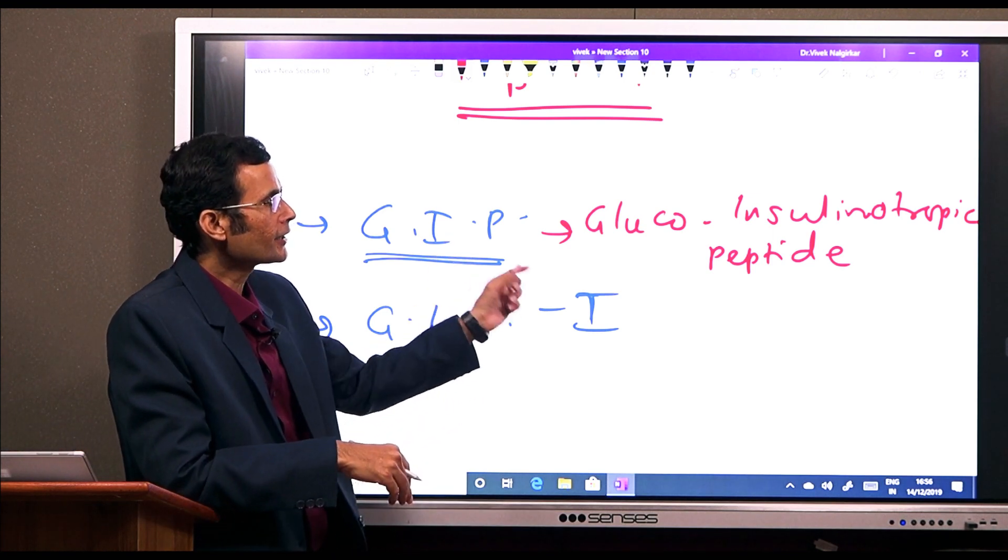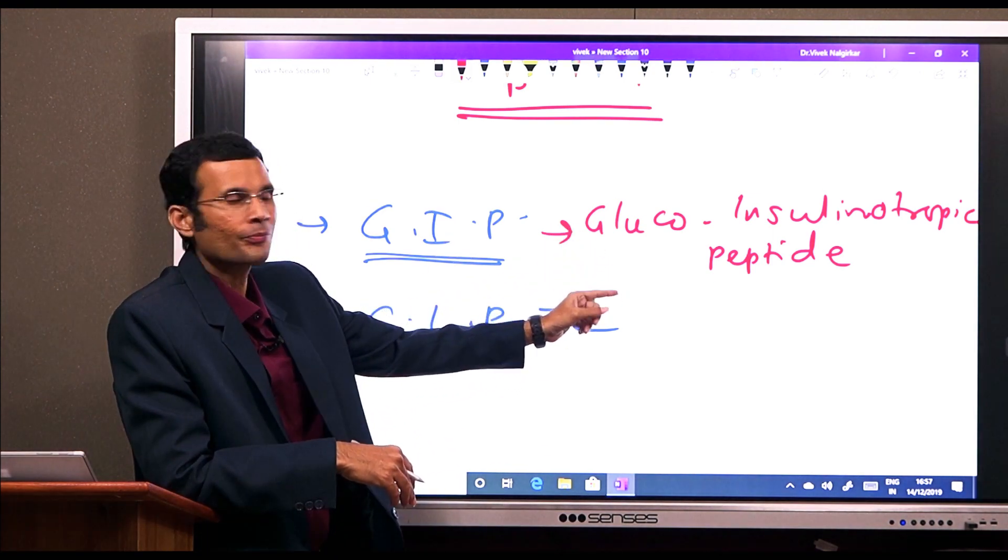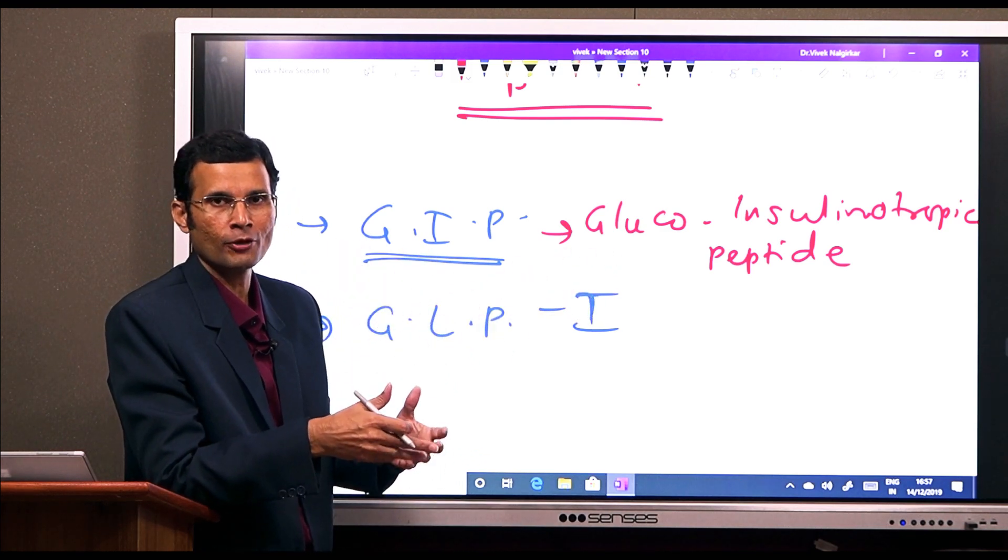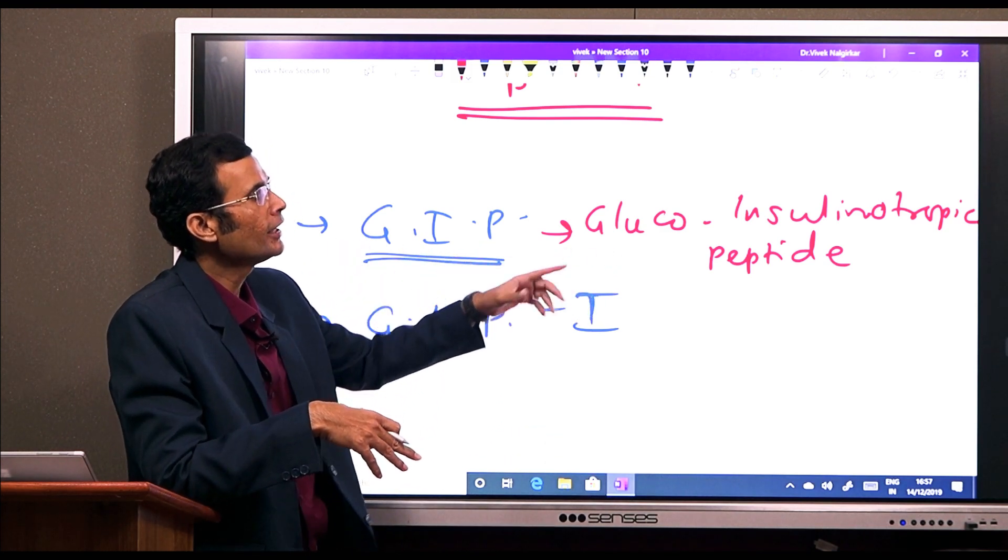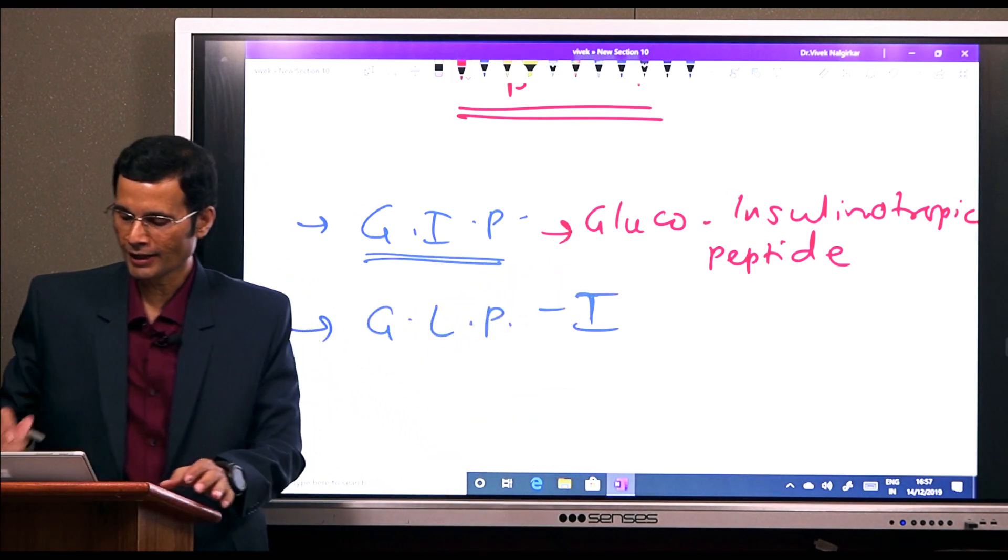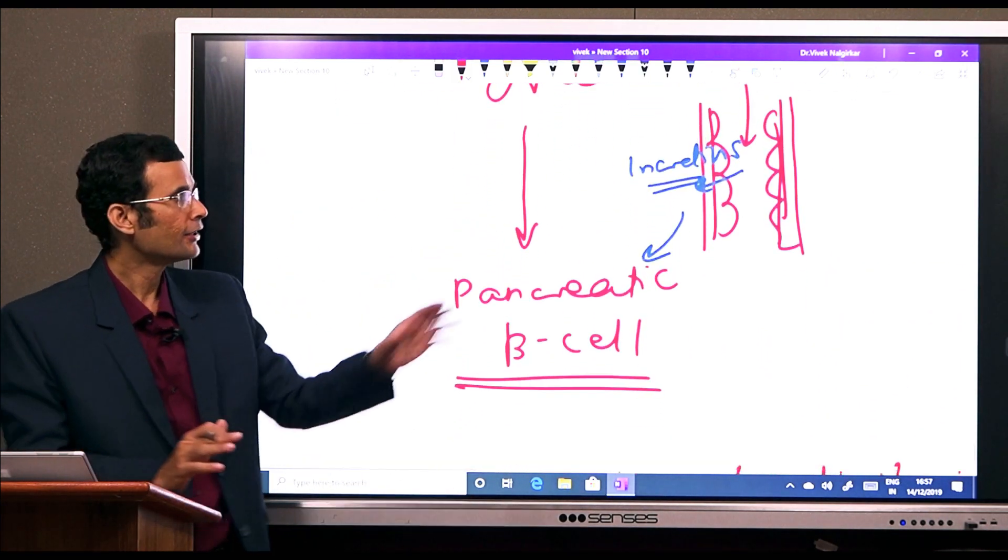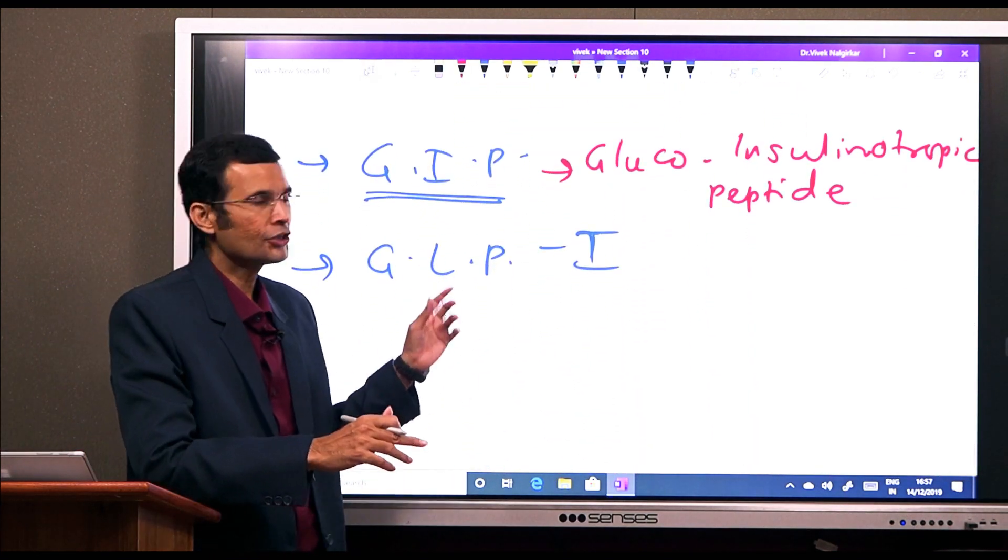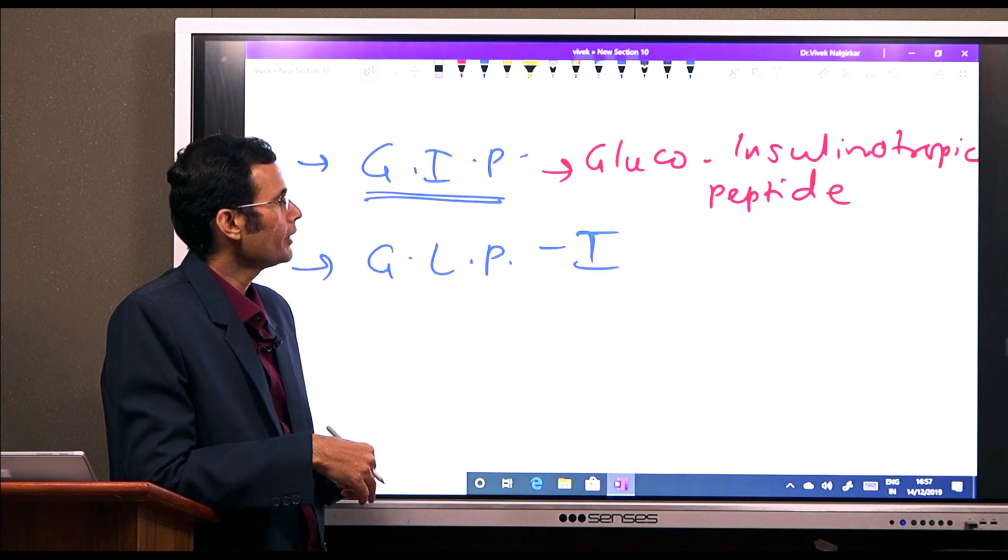So in response to oral glucose, this GIP is going to be released from the gut mucosa and then it will cause insulin secretion from the pancreas as we have seen here. So that is GIP, the one incretin known.